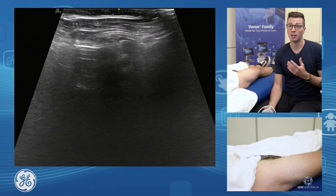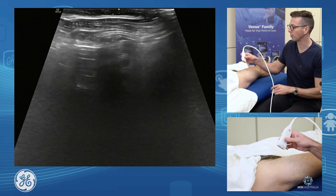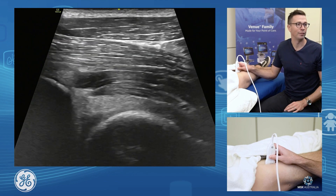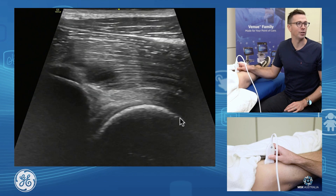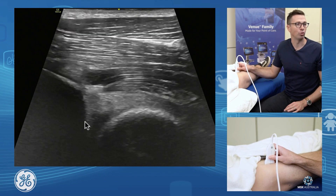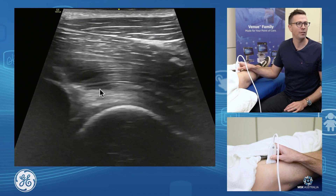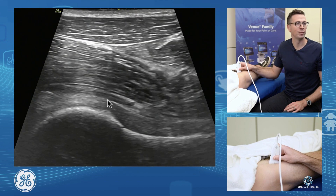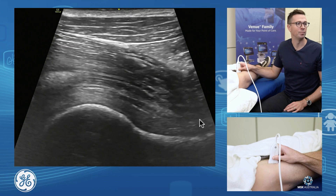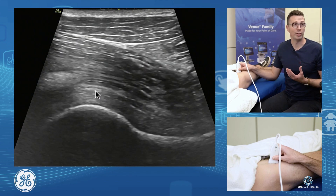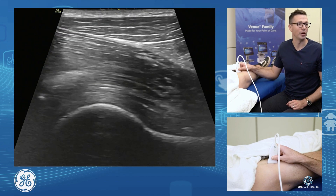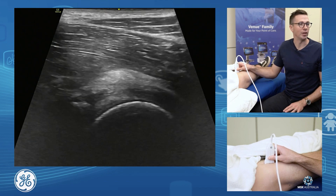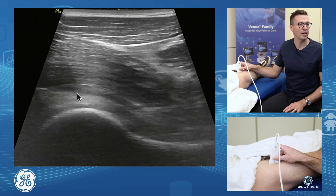Anterior hip joint assessment. First, we assess the hip joint proper. Put the probe straight on the front and have a look. We identify our femoral head, the anterior aspect of our acetabulum, the triangular shape of the anterior labrum, then scan down and assess the femoral head-neck junction. We look at the hip joint capsule — anteriorly this is the anterior iliofemoral ligament. If you have a joint effusion or joint synovitis, this is where it would be. We can also get a limited assessment of the anterior labrum and the joint itself.